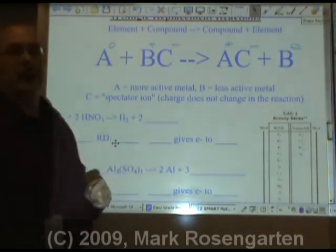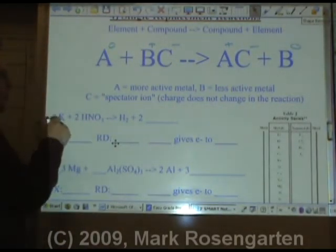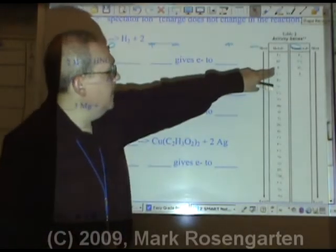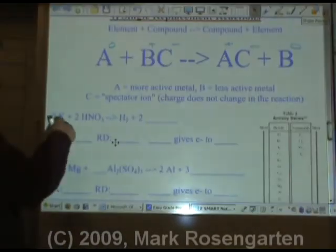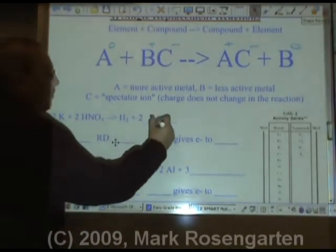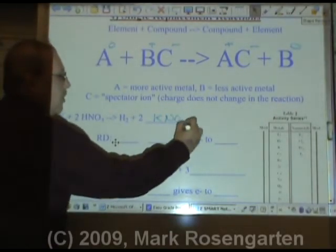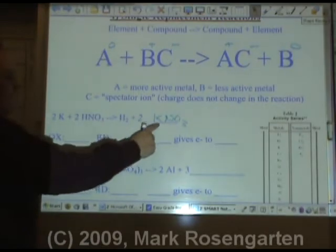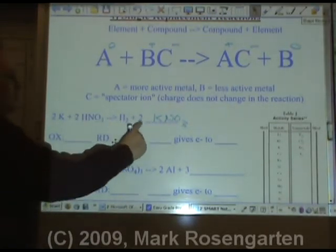C is the spectator ion. For example, potassium is more active than hydrogen. Therefore, potassium replaces hydrogen to form KNO3. Let's make sure the formula is written properly. Two Ks, two Ks. Two nitrates, two nitrates. It's all good.